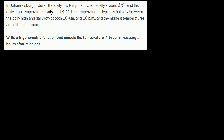In Johannesburg in June, the daily low temperature is usually around 3 degrees Celsius, and the daily high temperature is around 18 degrees Celsius. The temperature is typically halfway between the daily high and the daily low at both 10 a.m. and 10 p.m., and the highest temperatures are in the afternoon.